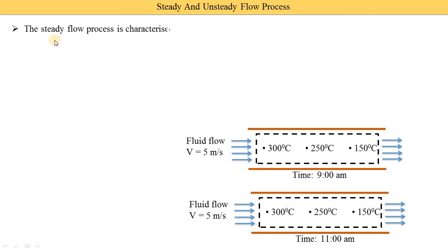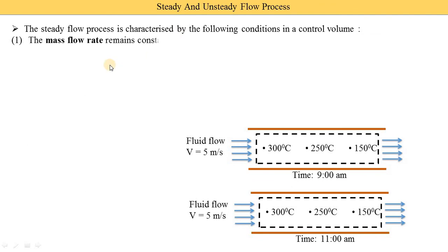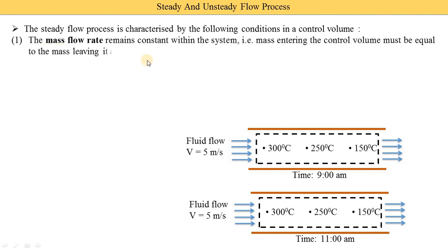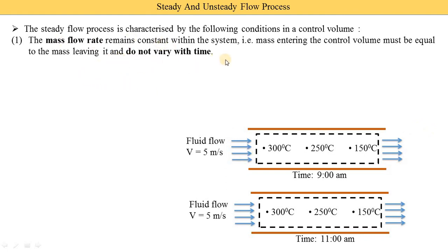Now we understand how the steady flow process is characterized by the following conditions in a control volume. There are five points. The first condition is that the mass flow rate remains constant within the system — mass entering the control volume must be equal to the mass leaving it and must not vary with time. For example, if mass flow rate entering is 5 cubic meters per second, at the exit we also require 5 cubic meters per second.